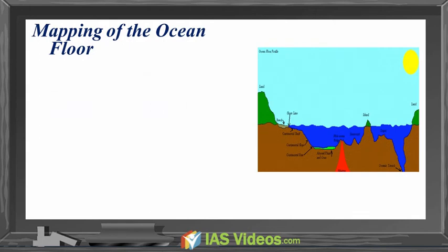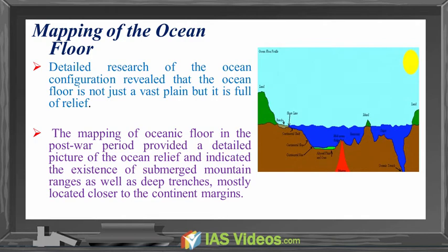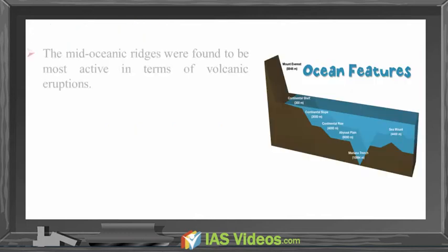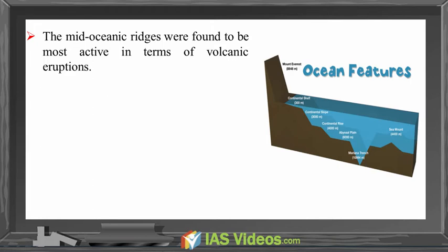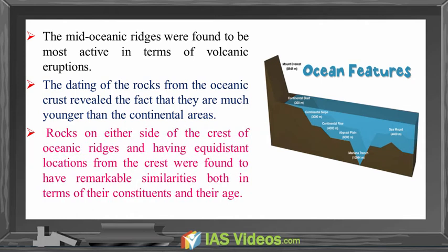Mapping of the Ocean Floor. Detailed research of the ocean configuration revealed that the ocean floor is not just a vast plain but is full of relief. The mapping of the oceanic floor in the post-war period provided a detailed picture of ocean relief and indicated the existence of submerged mountain ranges as well as deep trenches mostly located closer to the continent margins. The mid-oceanic ridges were found to be most active in terms of volcanic eruptions. The dating of rocks from the oceanic crust revealed that they are much younger than the continental areas. Rocks on either side of the crest of oceanic ridges at equidistant locations were found to have remarkable similarities in terms of their constituents and their age.